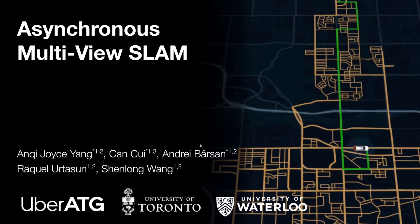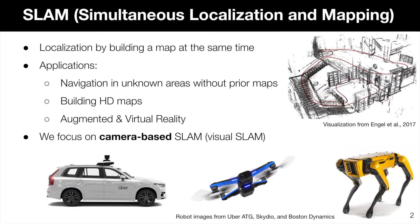Hello, we are Joyce and Andre, and we are presenting our work on asynchronous multi-view SLAM. SLAM, which stands for Simultaneous Localization and Mapping, aims to tackle robot state estimation by building a map at the same time. SLAM enables navigation in unknown areas without prior maps, and can also be used to build high-definition maps, with applications in augmented and virtual reality as well.